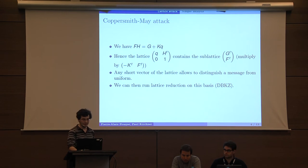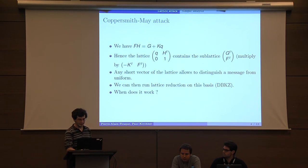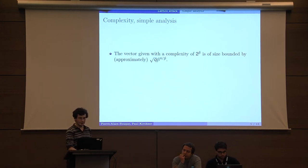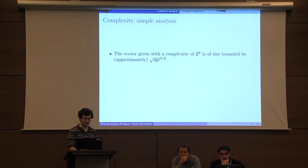The question is when does it work, of course. We can make a simple analysis of this algorithm. The vector given with complexity 2 to the beta is of size bounded by square root of 2 times the determinant to the power 1 over the dimension.